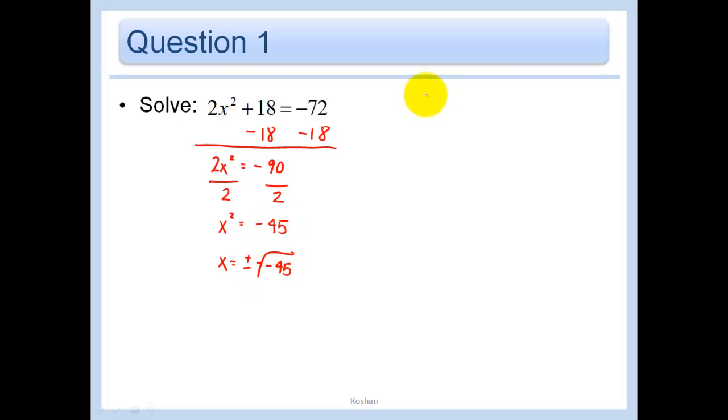So x is going to be equal to plus or minus root negative 45. Well, let's see how we can break 45 down. Well, 45 would clearly be 9 times 5, in which case we can take out a 3 and the 5 stays inside. And so this is just going to be plus or minus. We can take out the 3i and leave in that 5. And so that is our answer.